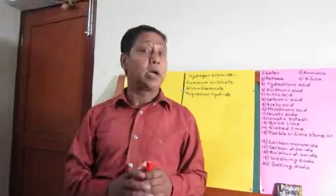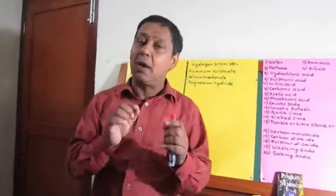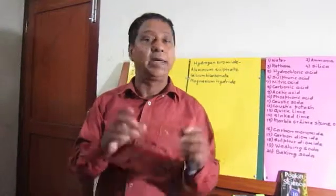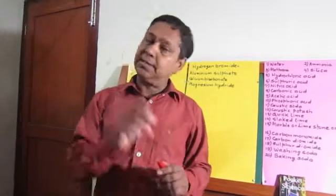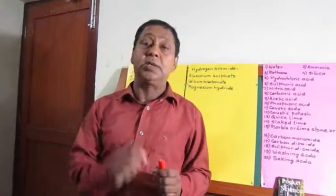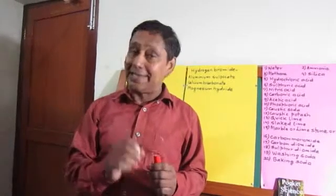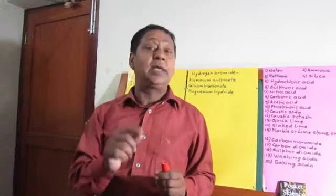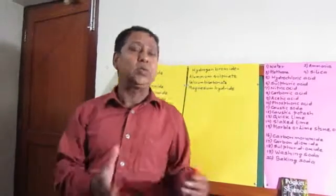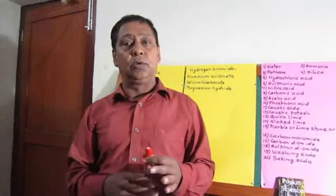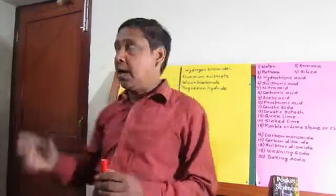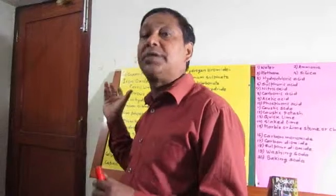A water molecule contains two atoms of hydrogen combined with one atom of oxygen, so its molecular formula is H₂O. In the same way, table salt's smallest particle which retains all the properties of table salt is NaCl, which contains one atom of sodium combined with one atom of chlorine.